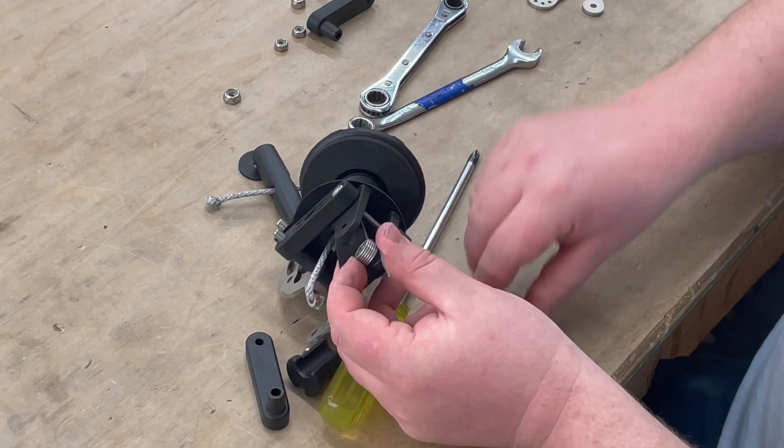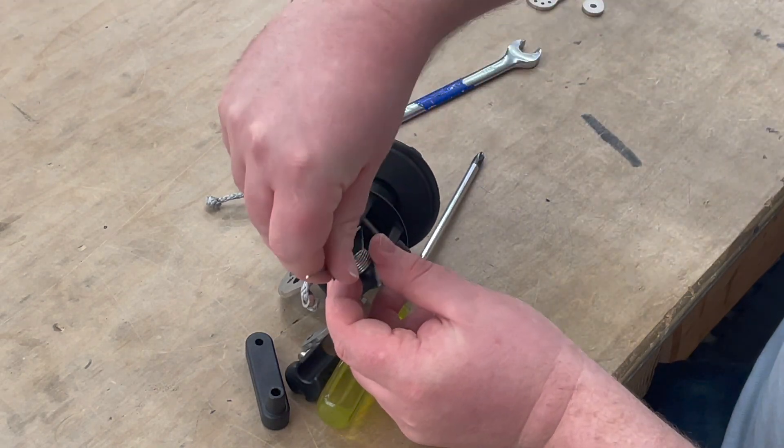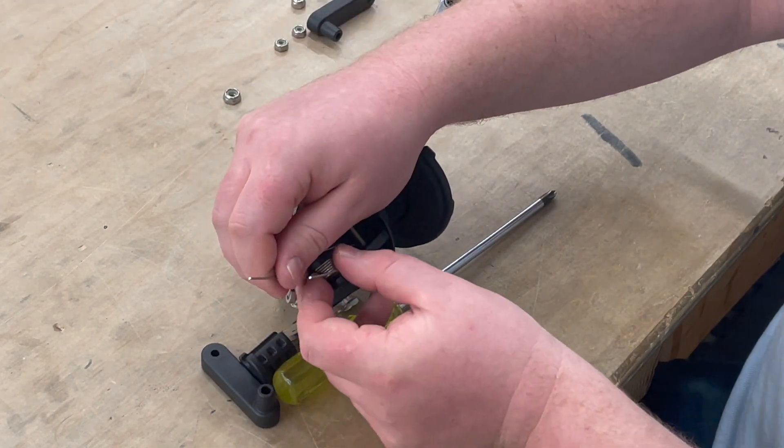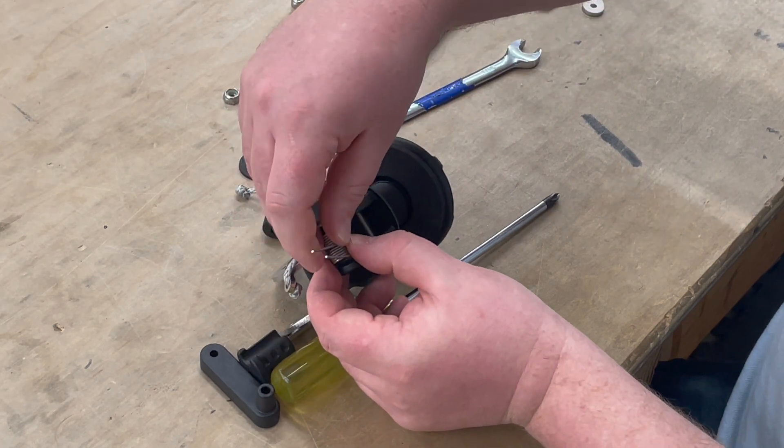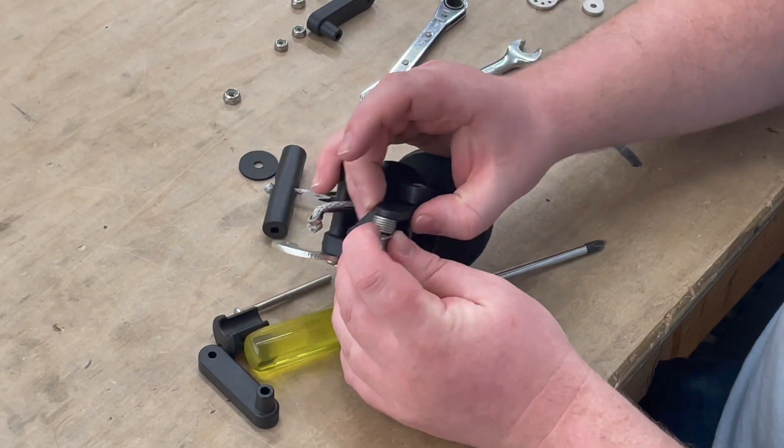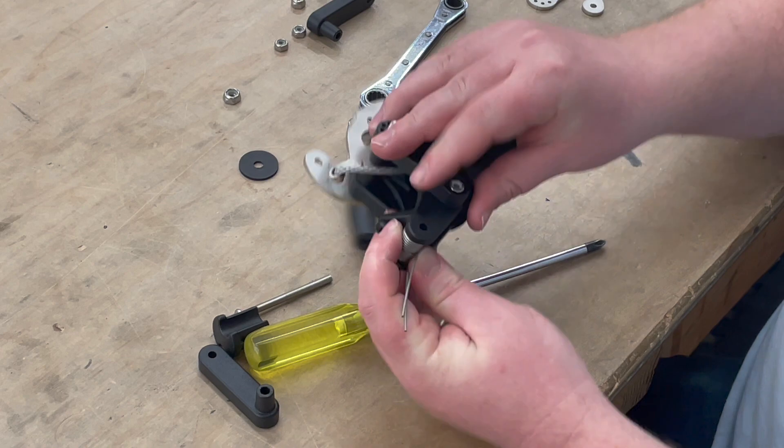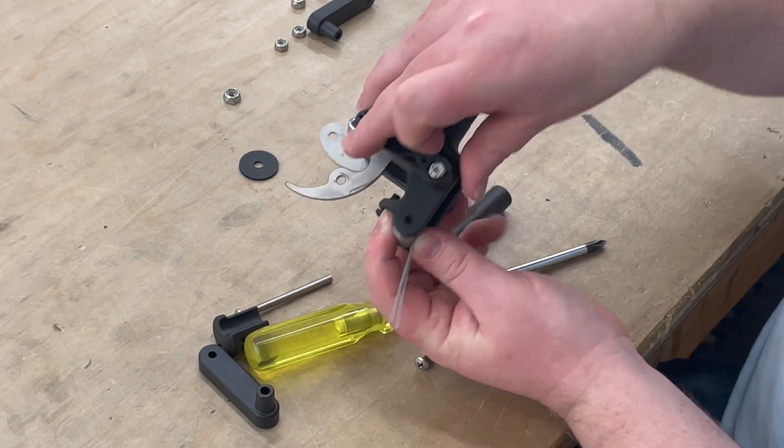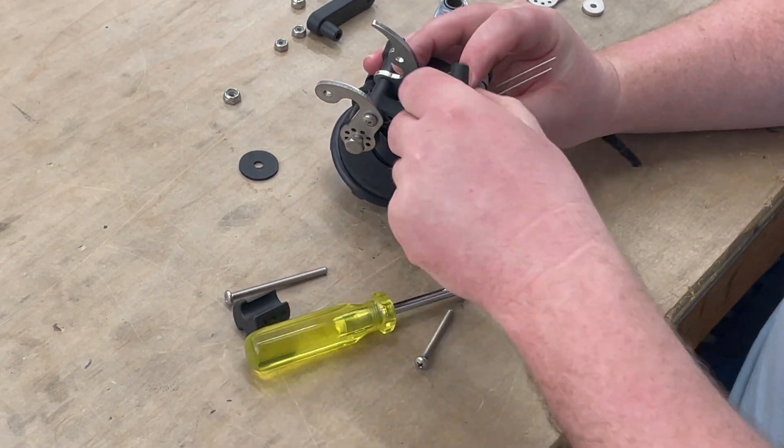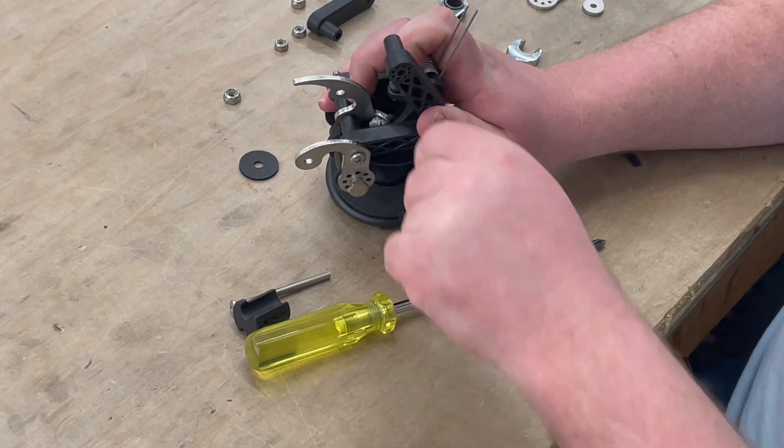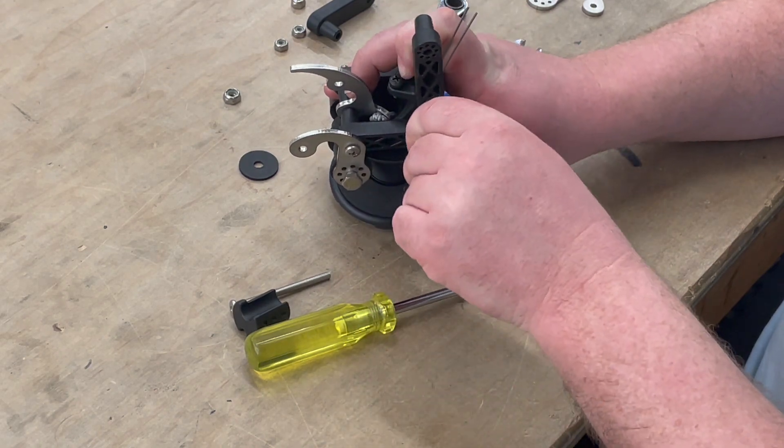What you're gonna do is take your second spring and insert it into the back, like the first one, side to side. And then try to get that lined up with the hole again there. Put the arm back with the screw.